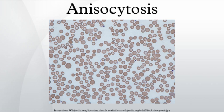Anisocytosis with microcytosis includes iron deficiency and sickle cell anemia. Anisocytosis with macrocytosis includes folate or vitamin B12 deficiency.